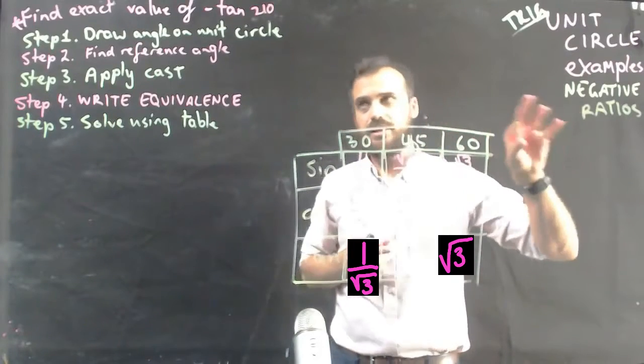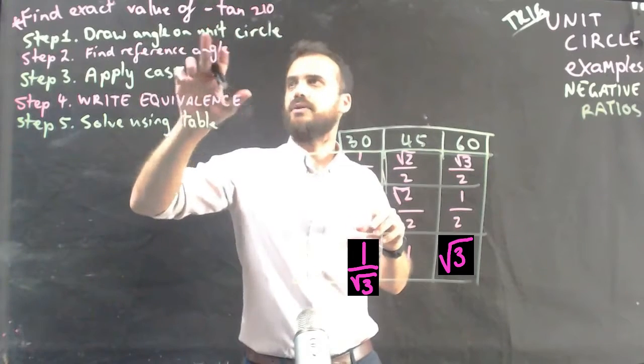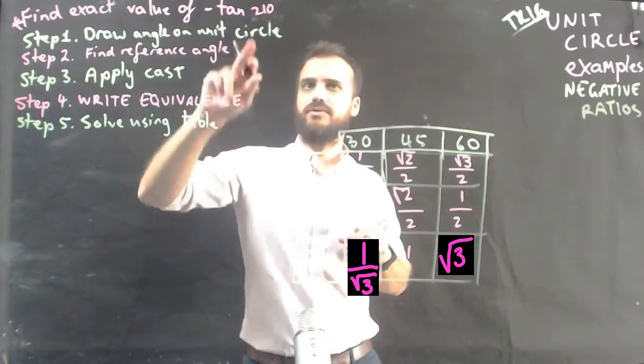So, they might try to trick you up with a negative ratio. Positive angle, 210, but negative. Find the exact value of negative tan 210.